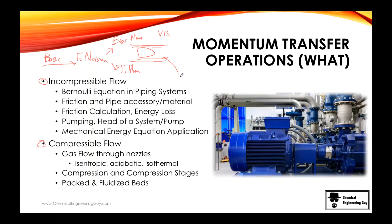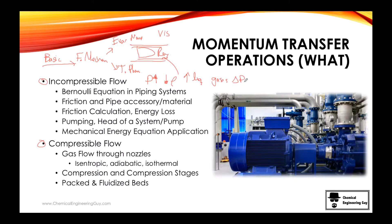Once you understand the basics — maybe even the Reynolds number — you will be able to study the two types of flow. Either you have incompressible flow, which means that if you add pressure, you will not be able to compress it. This is typically for liquids and maybe operations that use gases without significant pressure changes, such as a fan, where you can model the air as a liquid.